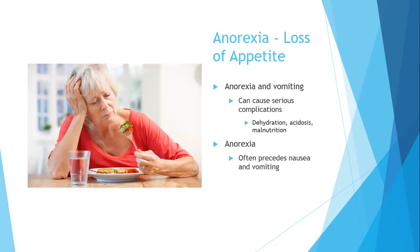Anorexia is the loss of appetite. When we talk about mental health disorders, we'll cover anorexia nervosa, the eating disorder, but anorexia as a symptom simply means loss of appetite. Anorexia and vomiting can cause serious complications including dehydration, metabolic acidosis, and malnutrition. Anorexia often precedes nausea and vomiting, and can also be a symptom of many other conditions that decrease your appetite.